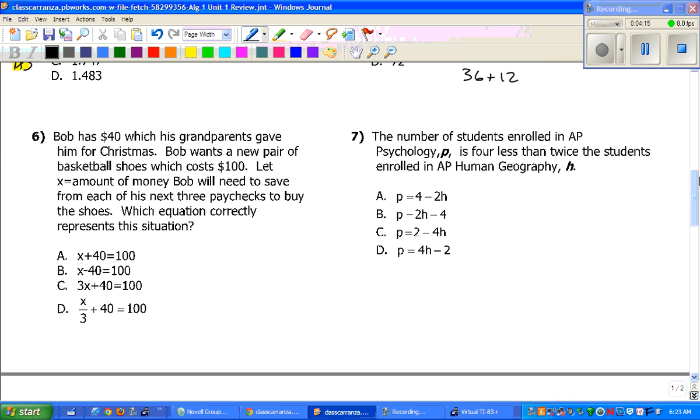Let's look at number 6. Bob has $40, which his parents gave him for Christmas. Bob wants to buy a new pair of basketball shoes, which costs $100. Let x equal the amount of money he will need to save from his next 3 paychecks to buy the shoes. Which equation correctly represents this situation? Now, one of the key things I see right here is this word 3. Looking at some of the answers, we can cross out A and B because they don't have a 3. So we know that the total cost is $100. He already has $40, so we're going to add the $40. And now the next 3 paychecks, we don't know how much that is yet, but that's what he needs to be saving. So that's why C is your final answer there.